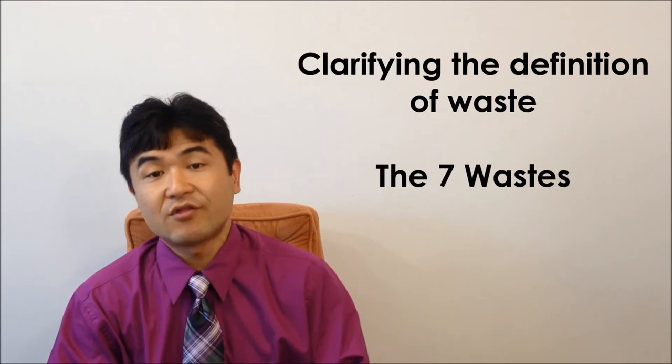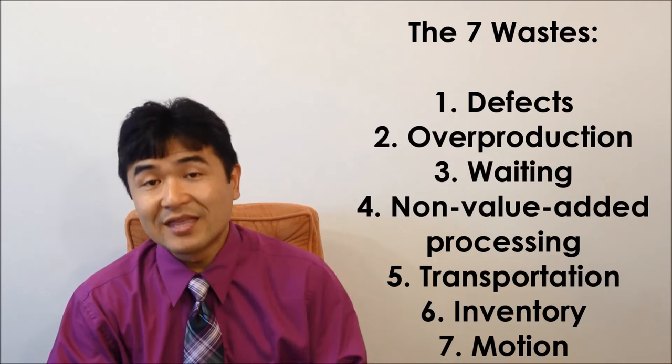They named it the Seven Wastes. The Seven Wastes are defect, overproduction, waiting, non-added processing, transportation, inventory, and motion. Toyota is saying those Seven Wastes should be as close to zero as possible.